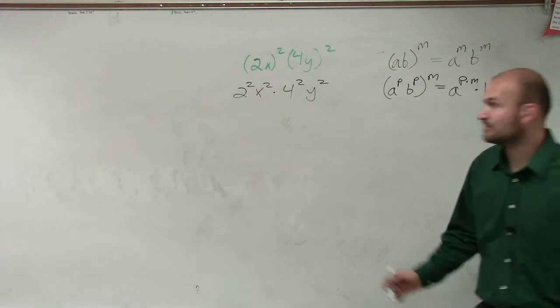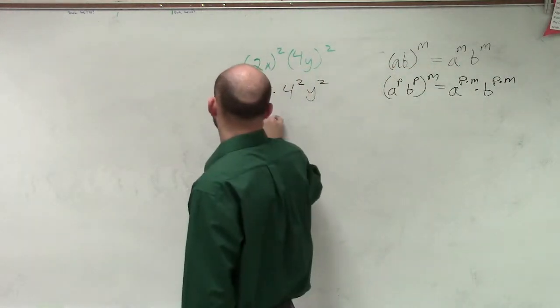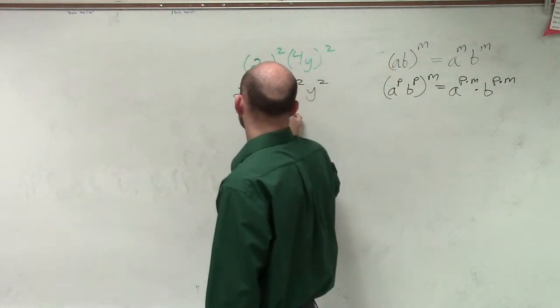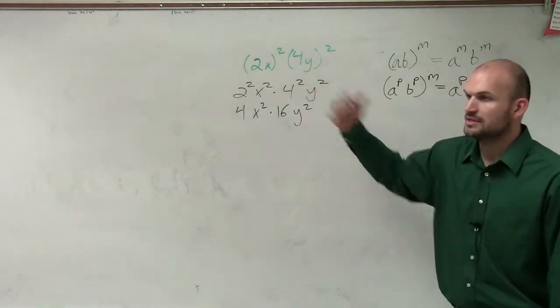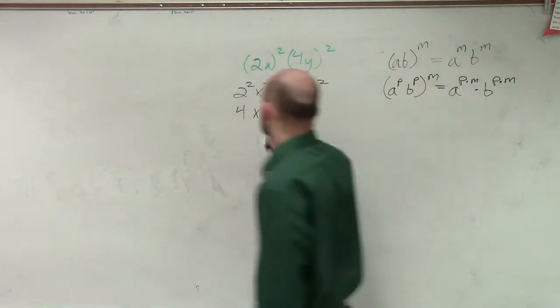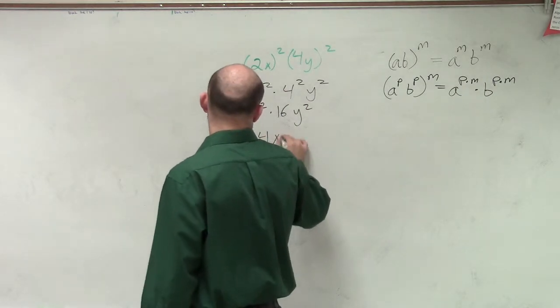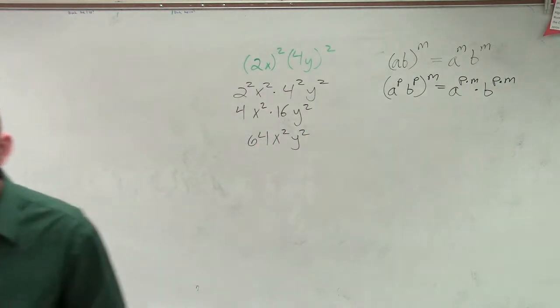And now I simplify. 2 squared is 4 times x squared. 4 squared is 16 y squared. Then 16 times 4 is 64 x squared y squared. And now it's 5 x squared. How exciting. Okay.